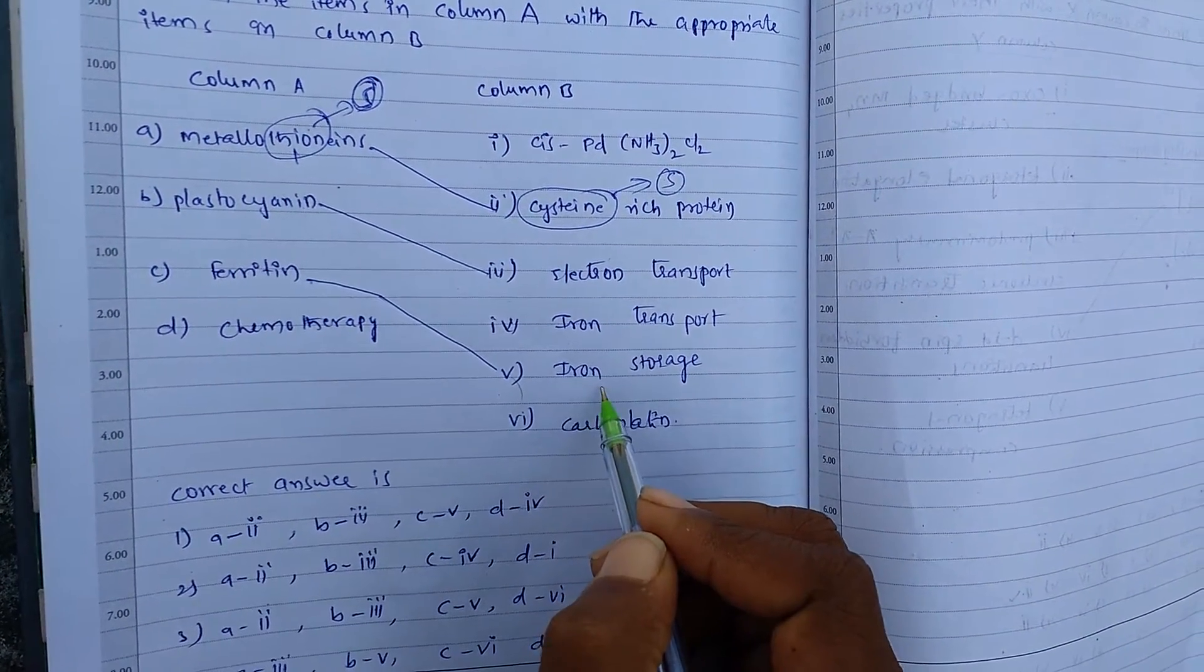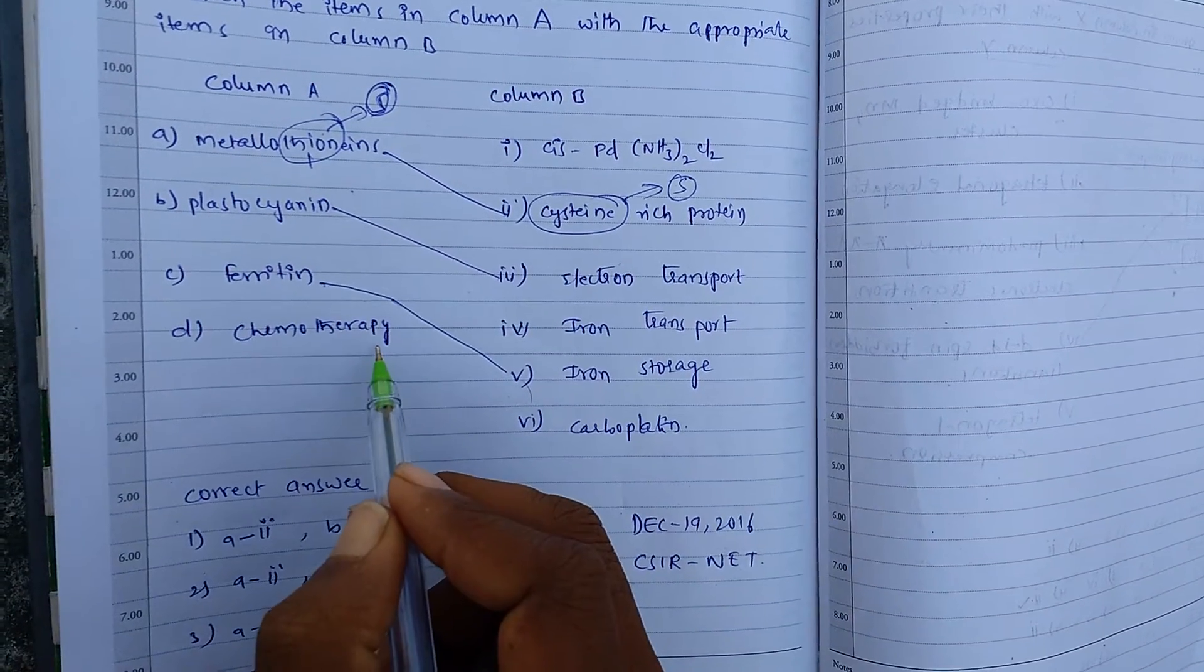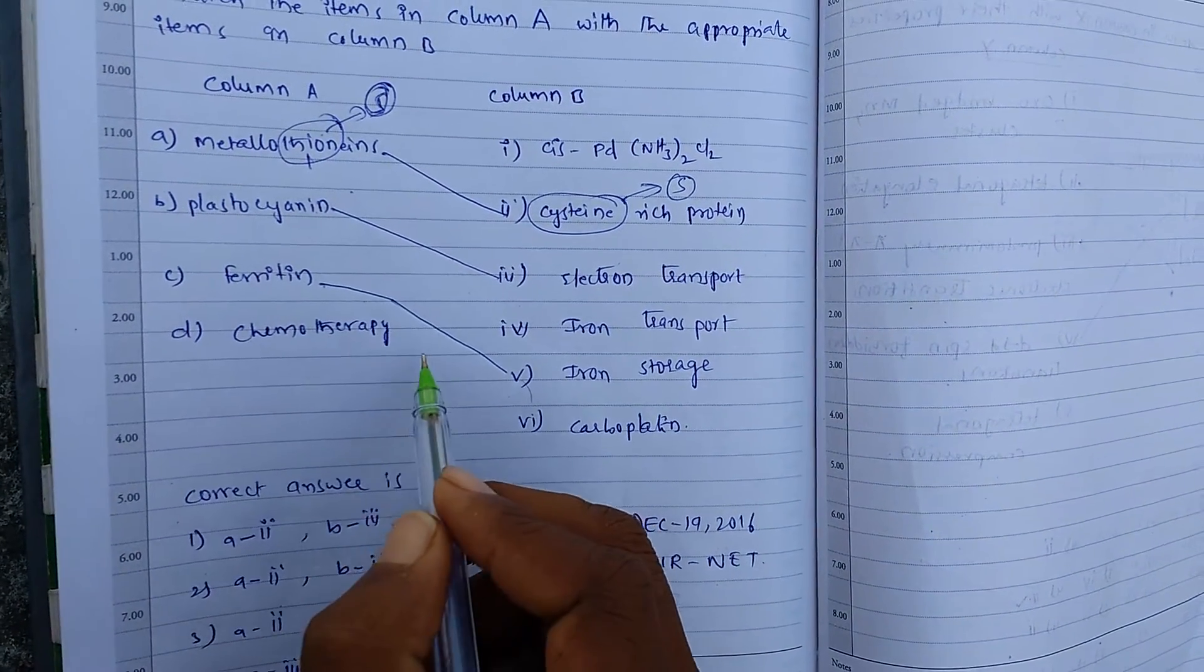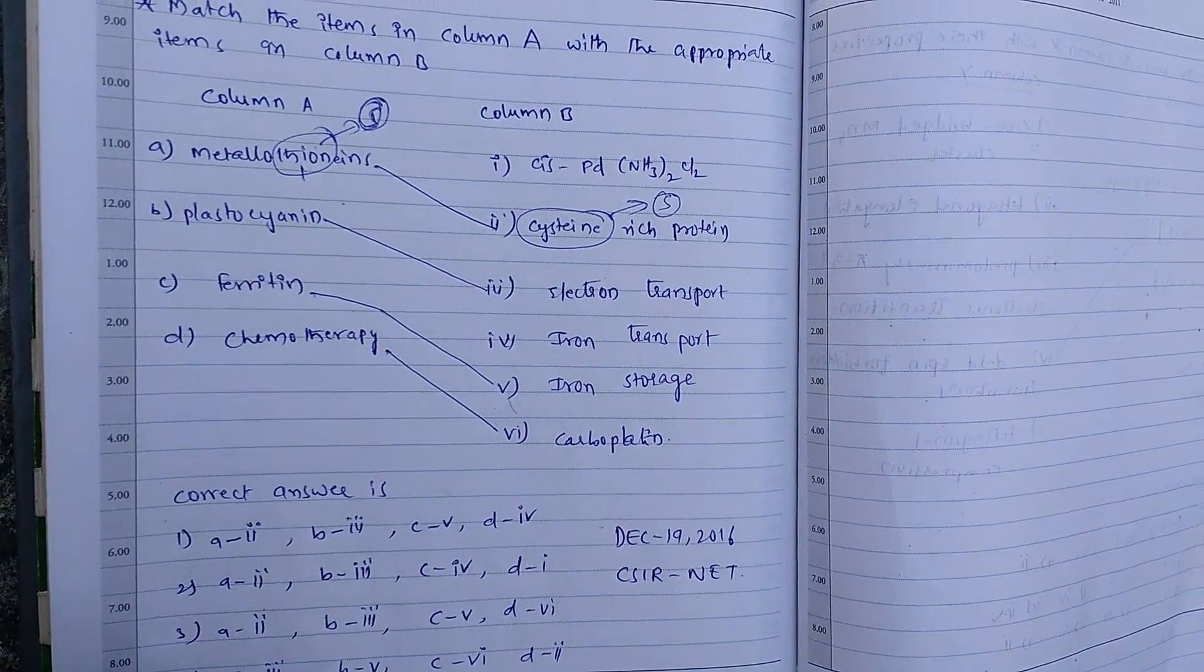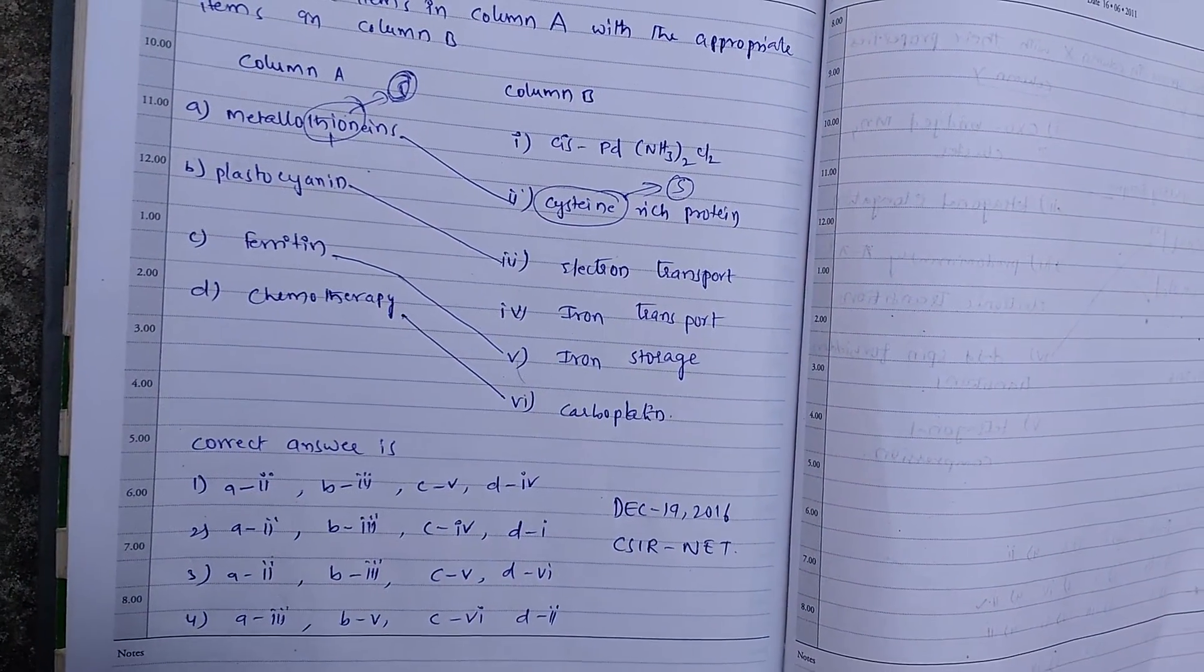So ferritin is iron storage protein. And chemotherapy. In chemotherapy, the carboplatin is used in chemotherapy. Okay, so from this we can easily get the answer.